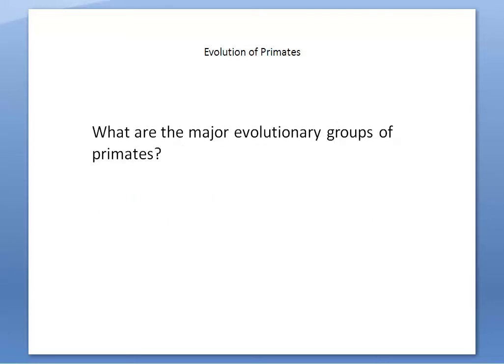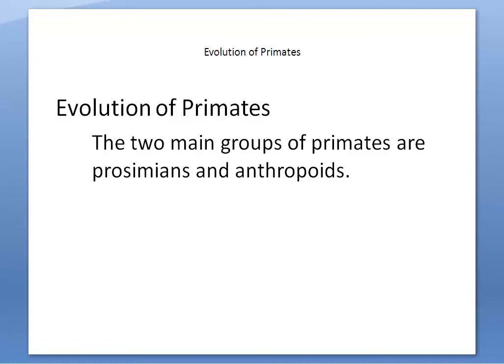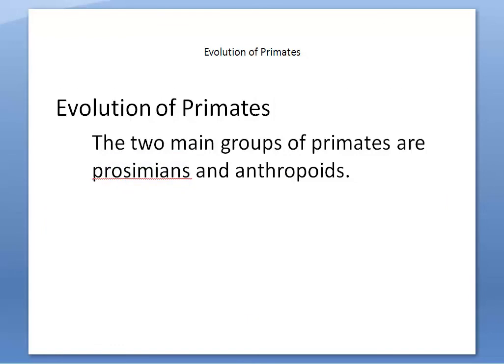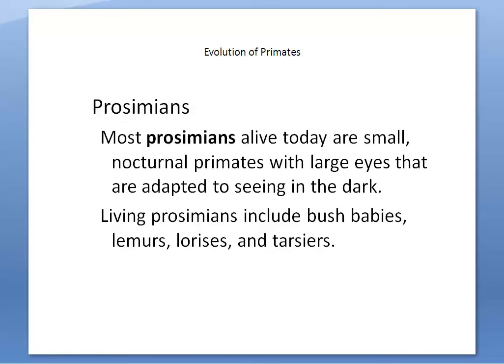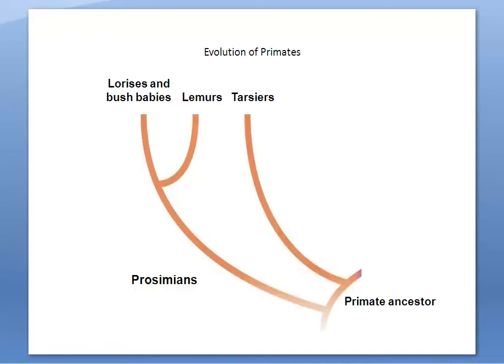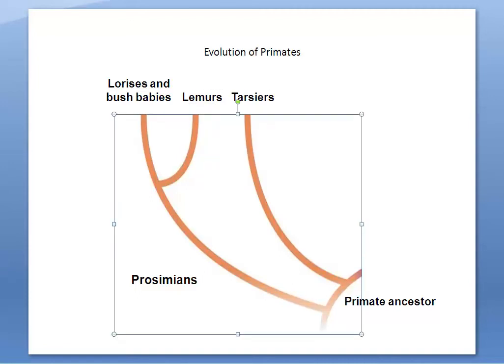Now we're going to look at the major evolutionary groups of primates that are still alive today. Our two main groups are called prosimians and anthropoids. Most prosimians alive today are small, nocturnal primates with very large eyes adapted to seeing in the dark. Living prosimians include bush babies, lemurs, lorises, and tarsiers. Our primate ancestors gave rise to all of these — lemurs being made famous by the movie Madagascar.